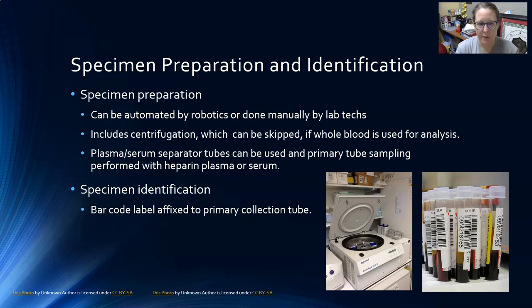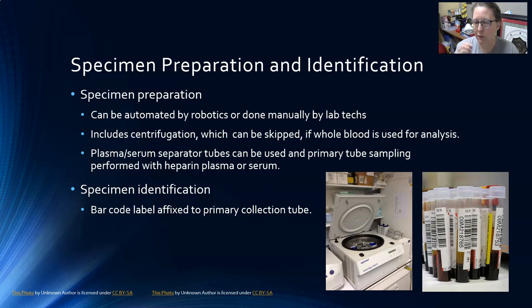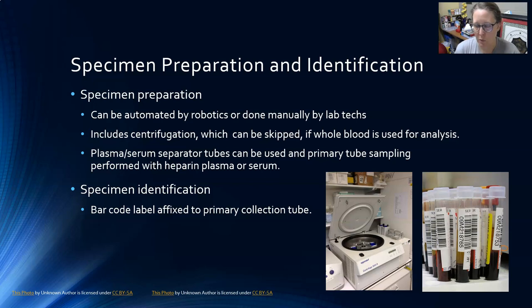Plasma or serum separator tubes can be used, and then primary tube sampling can be performed, meaning there's no need to pull specimen off of the primary tube — it can just be uncapped and loaded straight onto the analyzer. Primary tube sampling on the analyzer will be done with either the heparin plasma or the serum, depending on what the sample was.